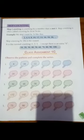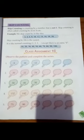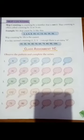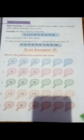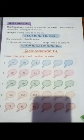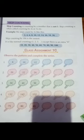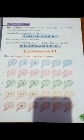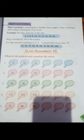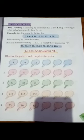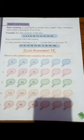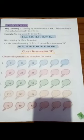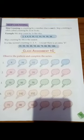Skip counting by 2, by 5, or by 10. For example, we skip count by 2 like this: 2, 4, 6, 8, 10, 12, 14, 16, 18.